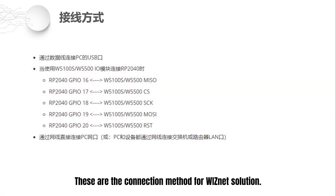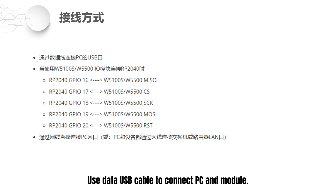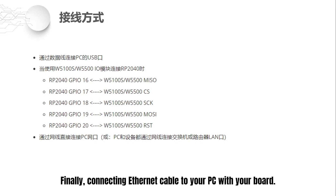These are the connection methods for the WIZnet solution. Use a USB data cable to connect the PC and the module. For SPI wiring, please refer to the table above. Finally, connect the Ethernet cable between your PC and your board.